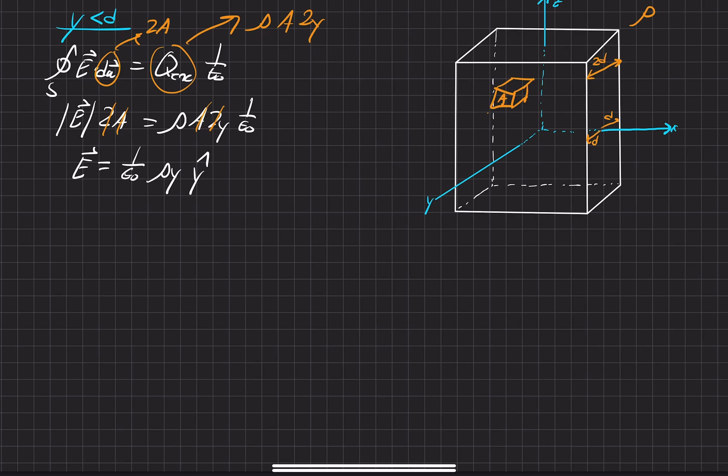For the second part of the problem, we're going to find the electric field now on the outside. So once it breaks this threshold, once we grow this Gaussian surface, the Gaussian surface, so it still has a length of 2y, but now it encompasses all of the thickness of it.